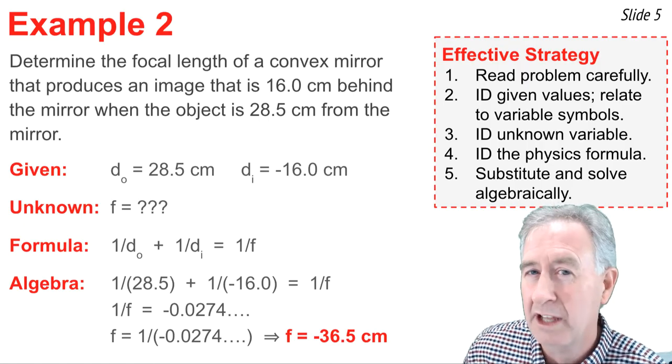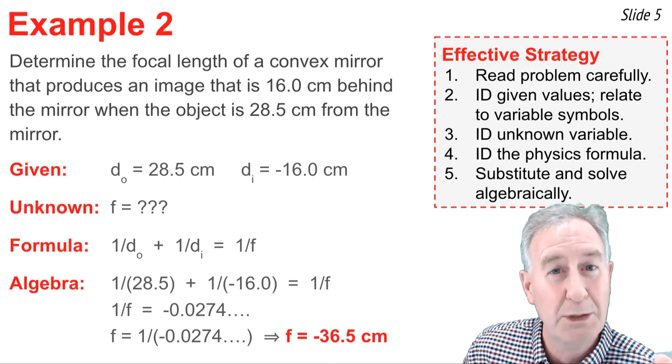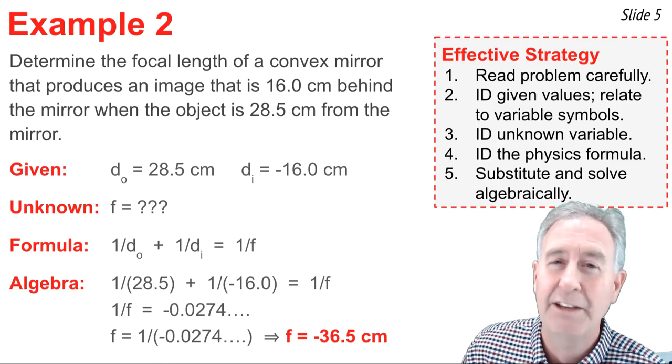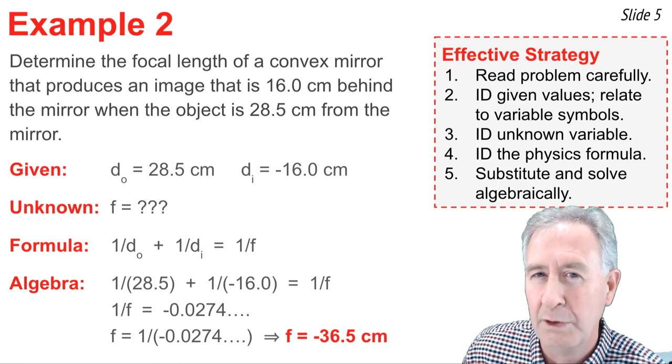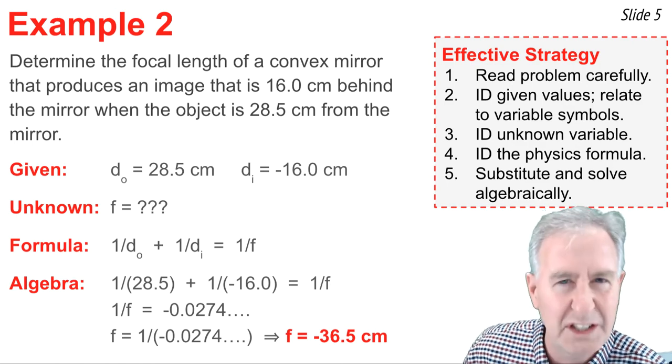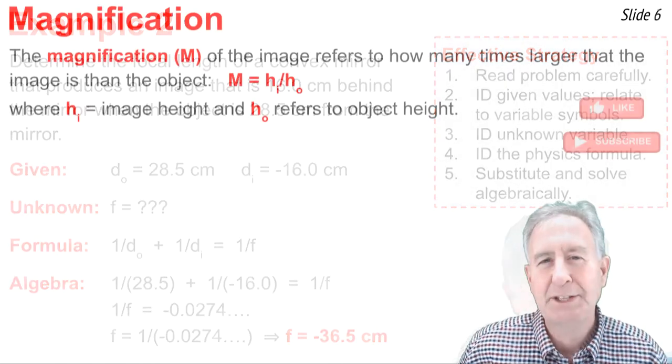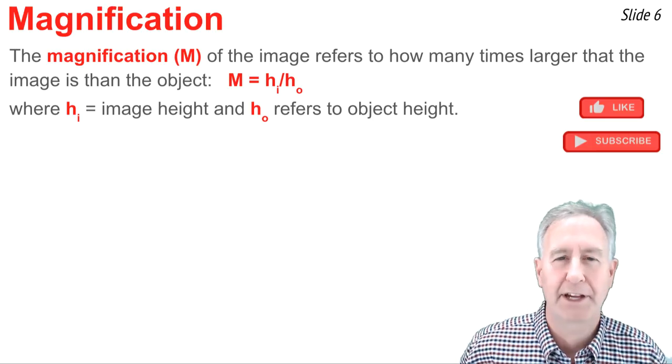Hey look, that negative was the answer for the focal length, which means as a convex mirror, which is what I should have gotten. If you didn't get a negative there for your focal length of a convex mirror, you know you did something wrong. You can go back and check your work. Hey, let's learn a new trick. It's called magnification.